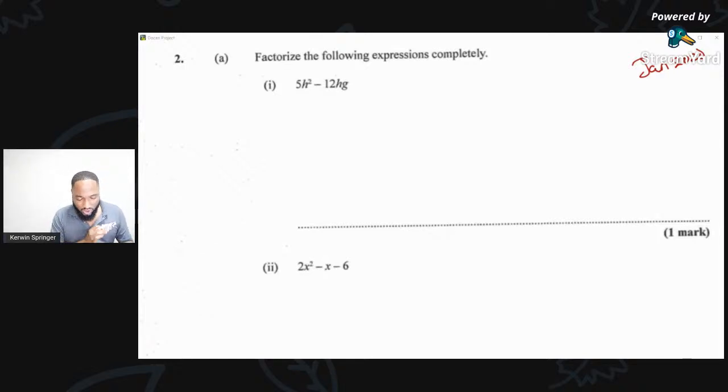I could just do normal factorizing. I have the year and month right here: Jan 2020. So I could just say 5, 12, no common factors there. What's common? There's an h in both of them. So h(5h - 12g).